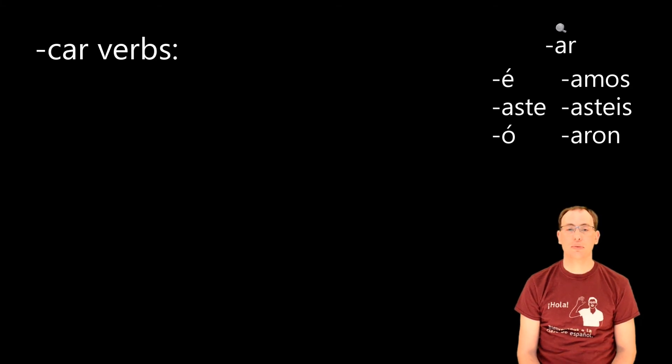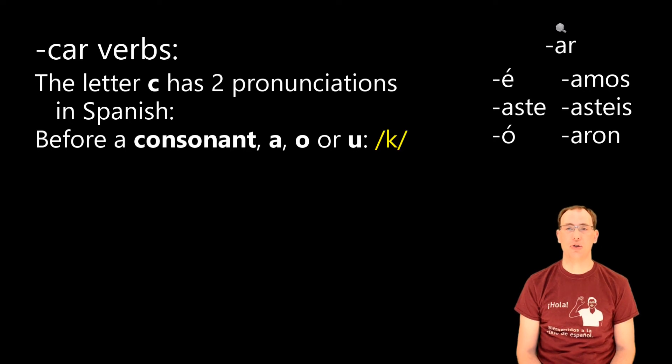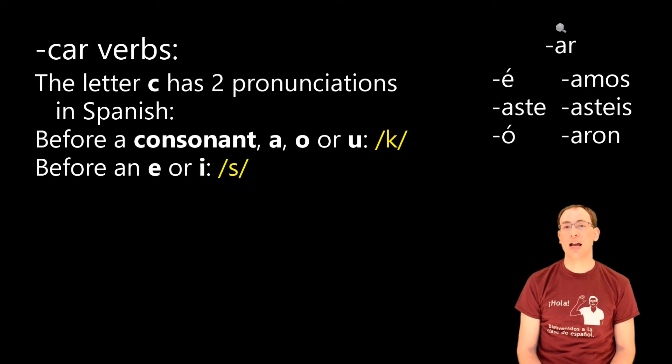Let's start with car verbs. The reason we have to have a spelling change with car verbs is because the letter c in Spanish can be pronounced one of two ways. If the next letter after the c is a consonant, an a, an o, or a u, we're going to pronounce the letter c as /k/ in Spanish. On the other hand, if the next letter is an e or an i, we're going to pronounce the letter c in Latin America as /s/, or in Spain as /th/.